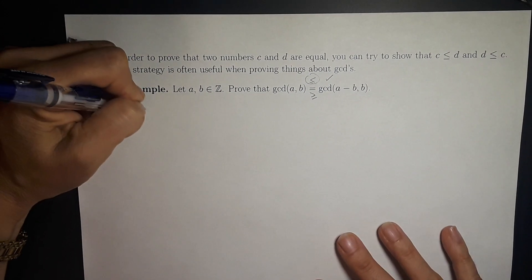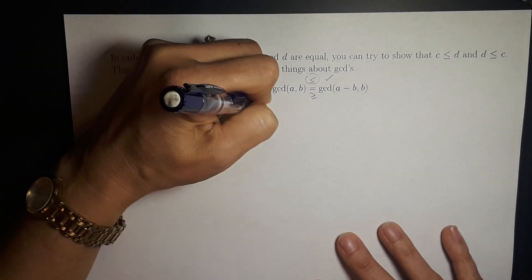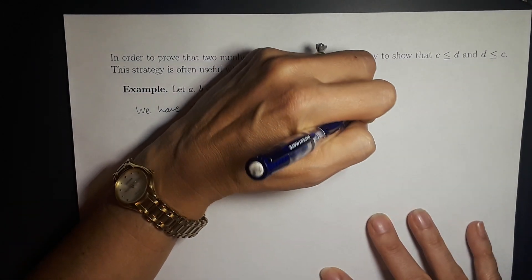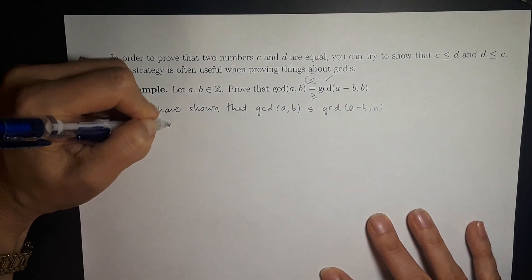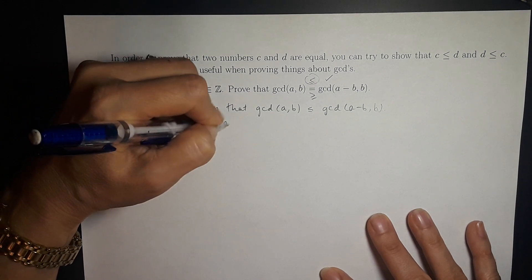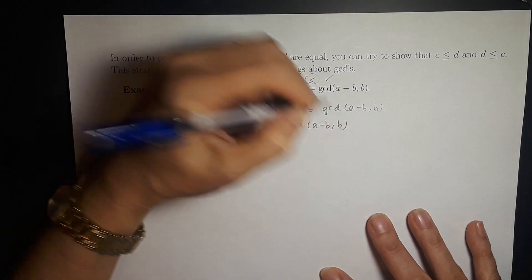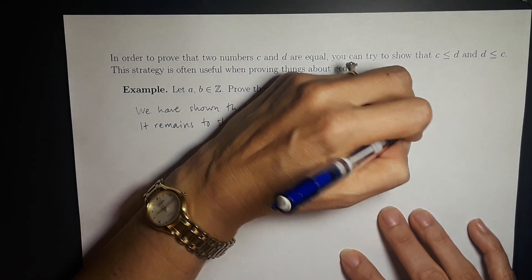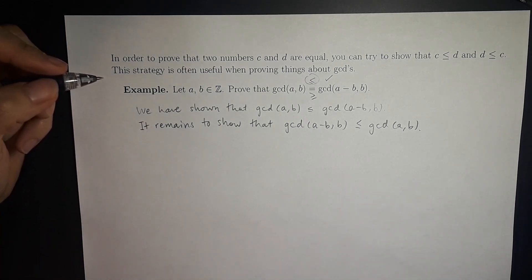We have shown that the GCD of a and b is less than or equal to the GCD of a minus b and b. So it remains to show that the GCD of a minus b and b is less than or equal to the GCD of a and b. This proof is very similar to the other one, and I invite you to pause the video and try to work it out yourself before going on.